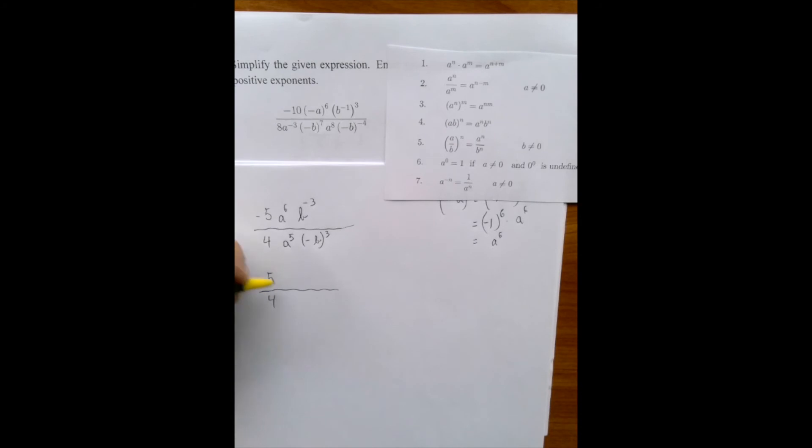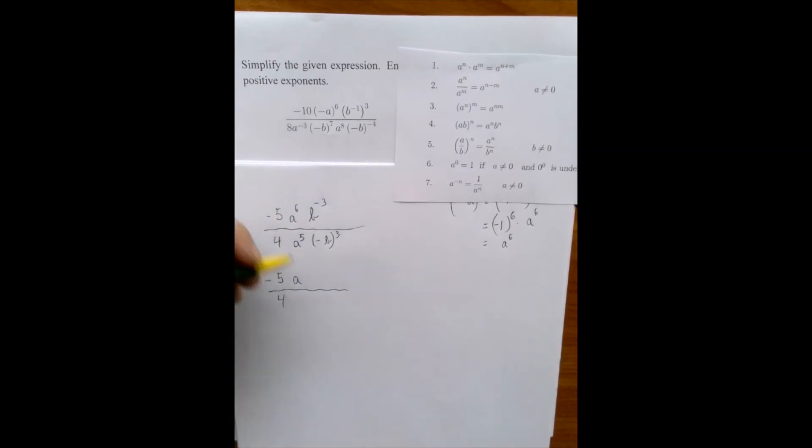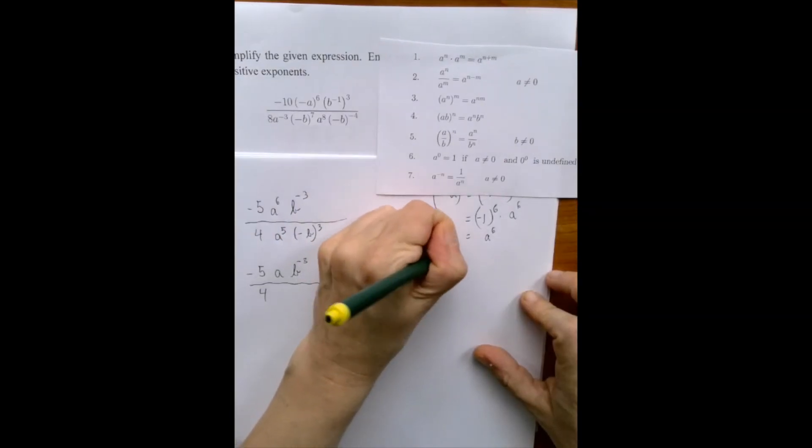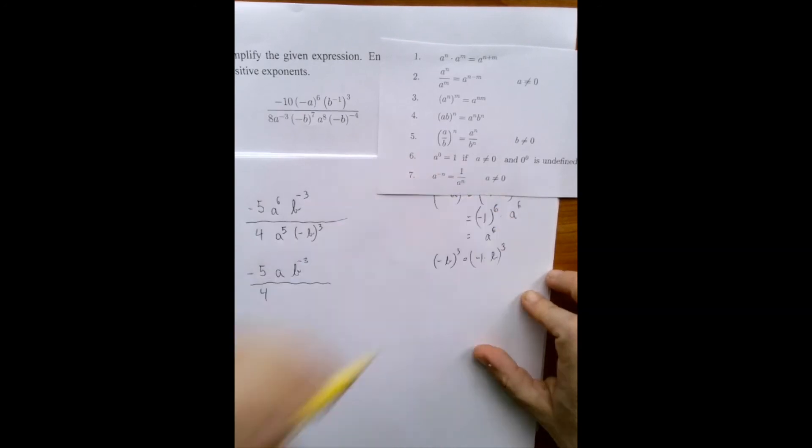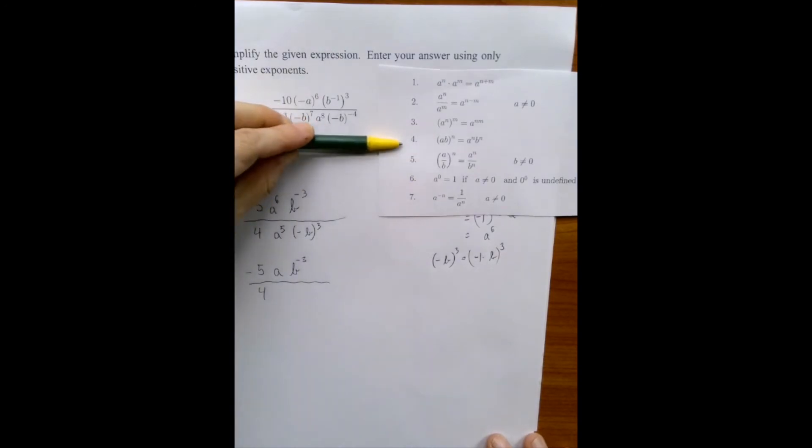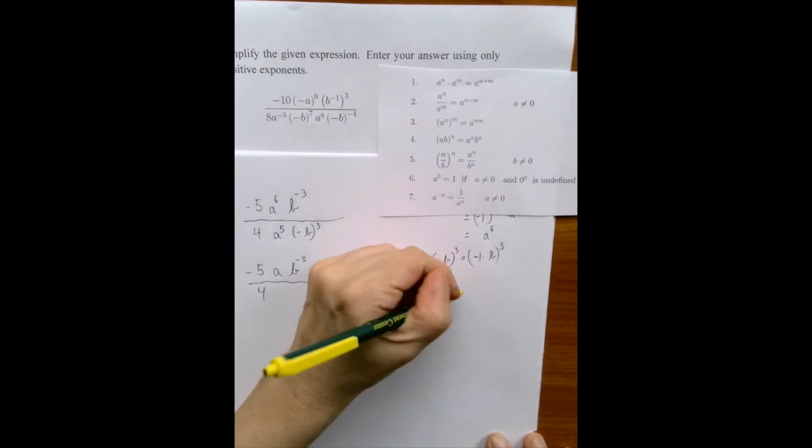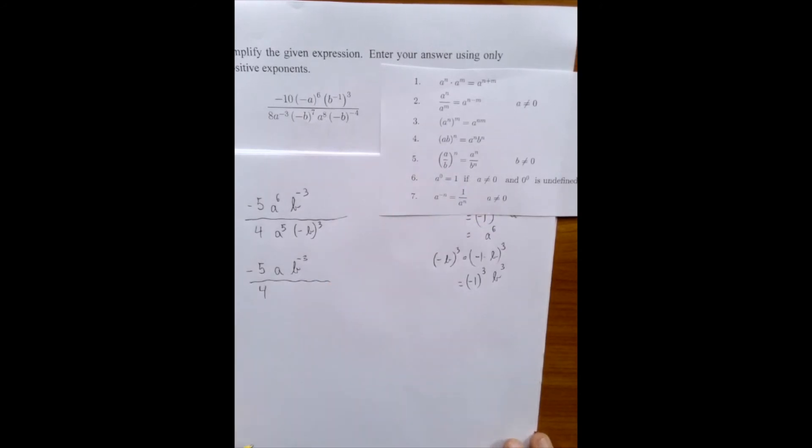Well, actually, now that we see between a to the 6 and a to the 5, that's an easy cancellation. There is just one a left in the numerator. And now b to the minus 3 here. And this minus b can be interpreted as negative 1 times b. And then when we do the exponentiation factor by factor via rule number 4, then we'll find that this one is going to stay negative because minus 1, negative 1 to the 3rd power, is negative 1.